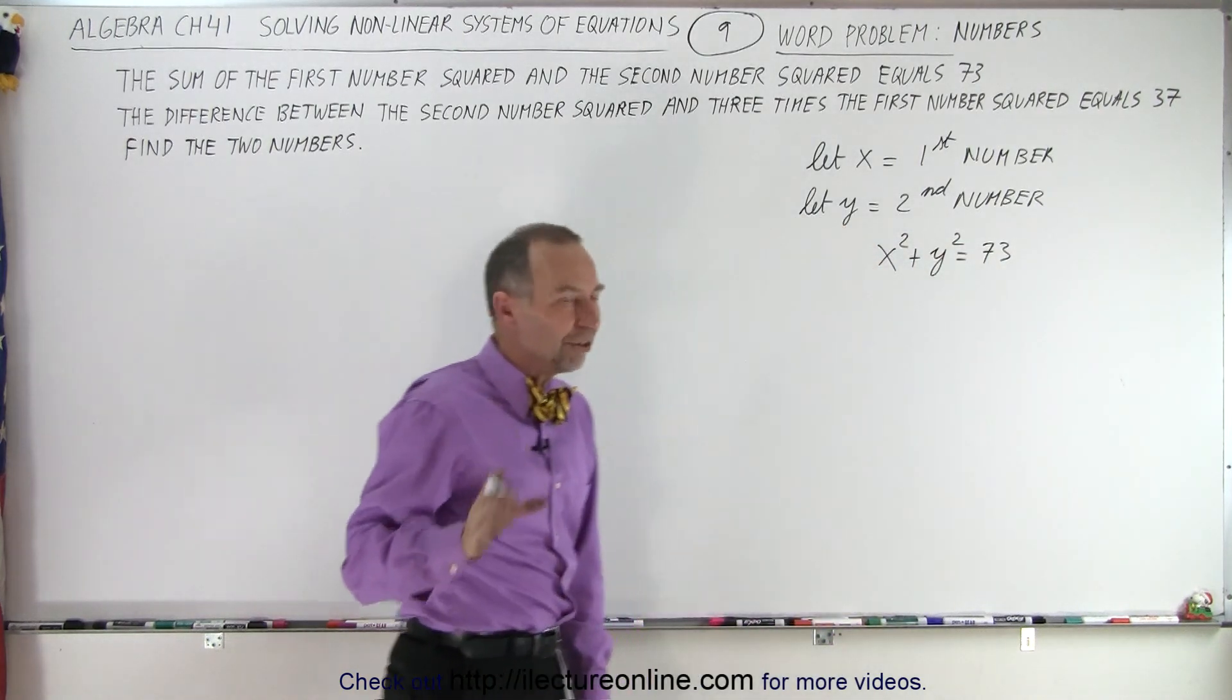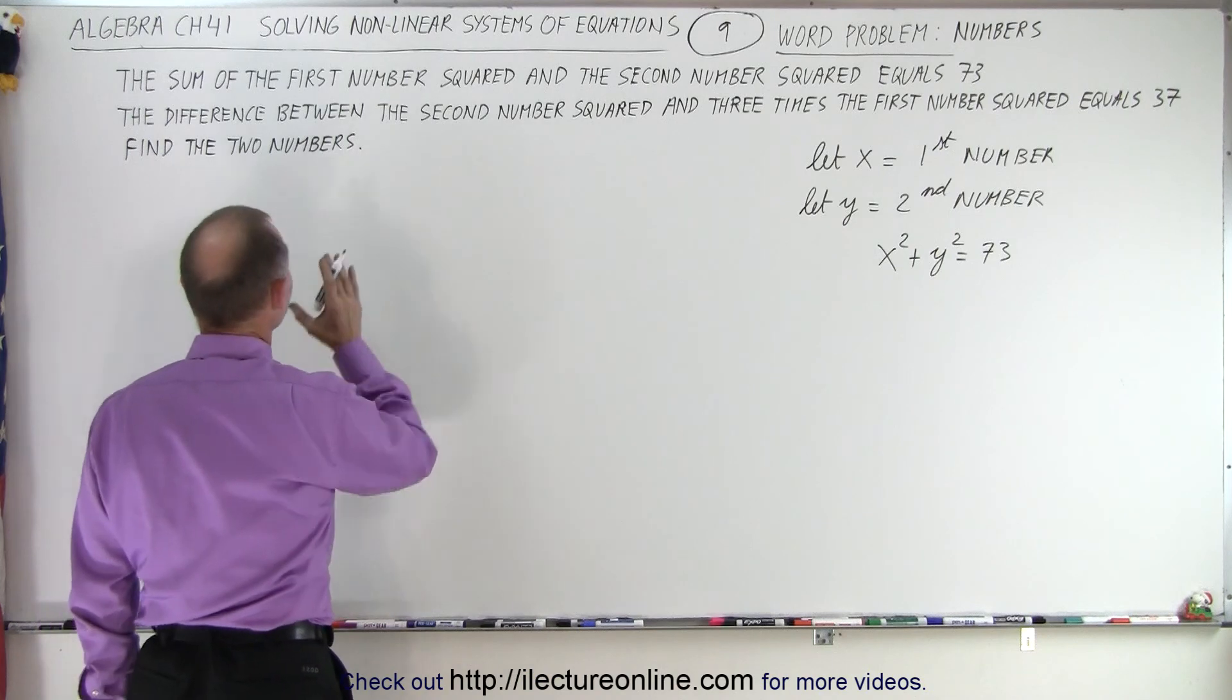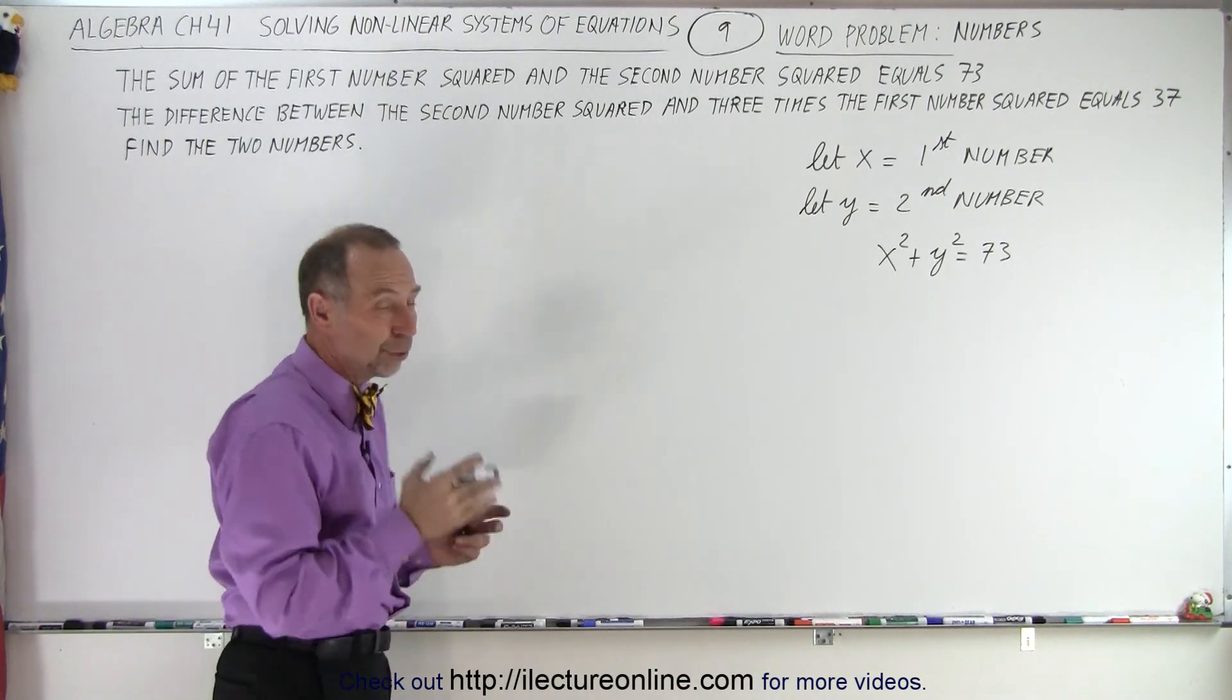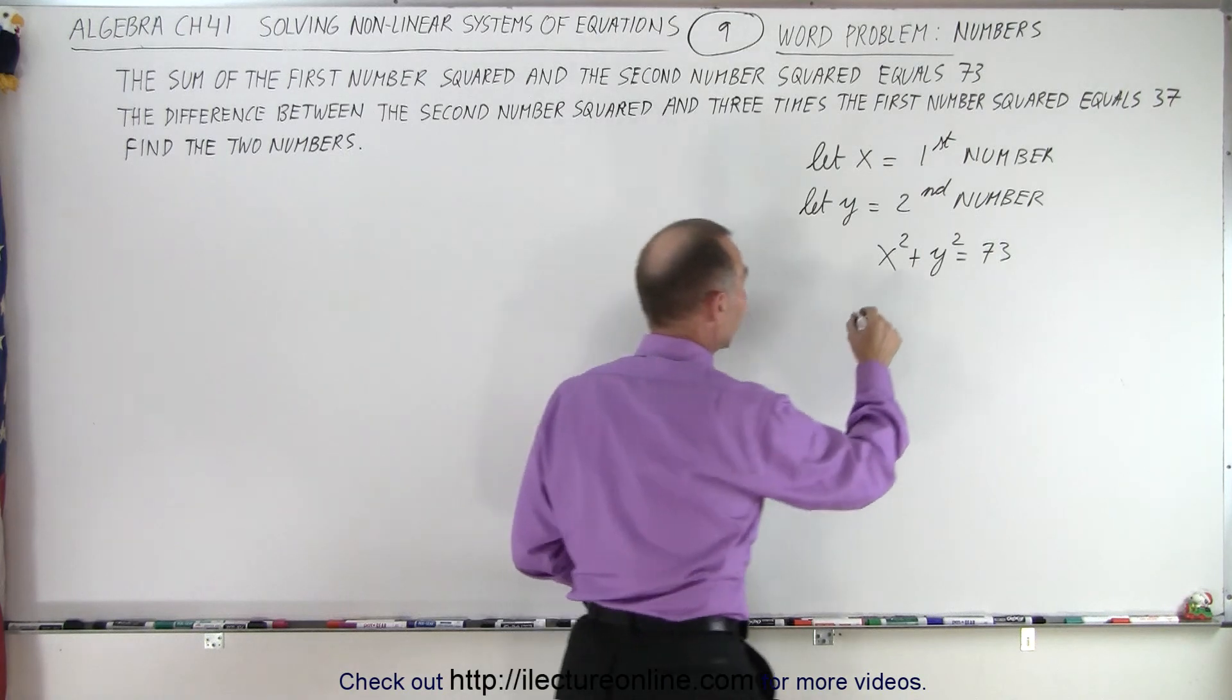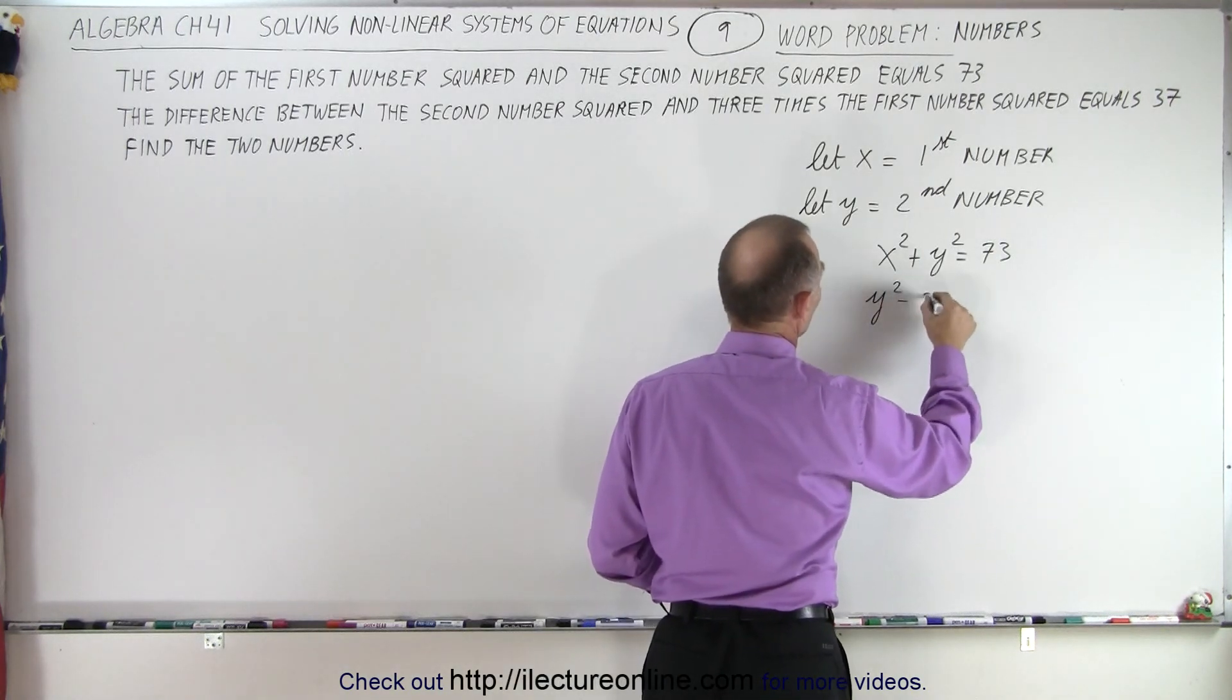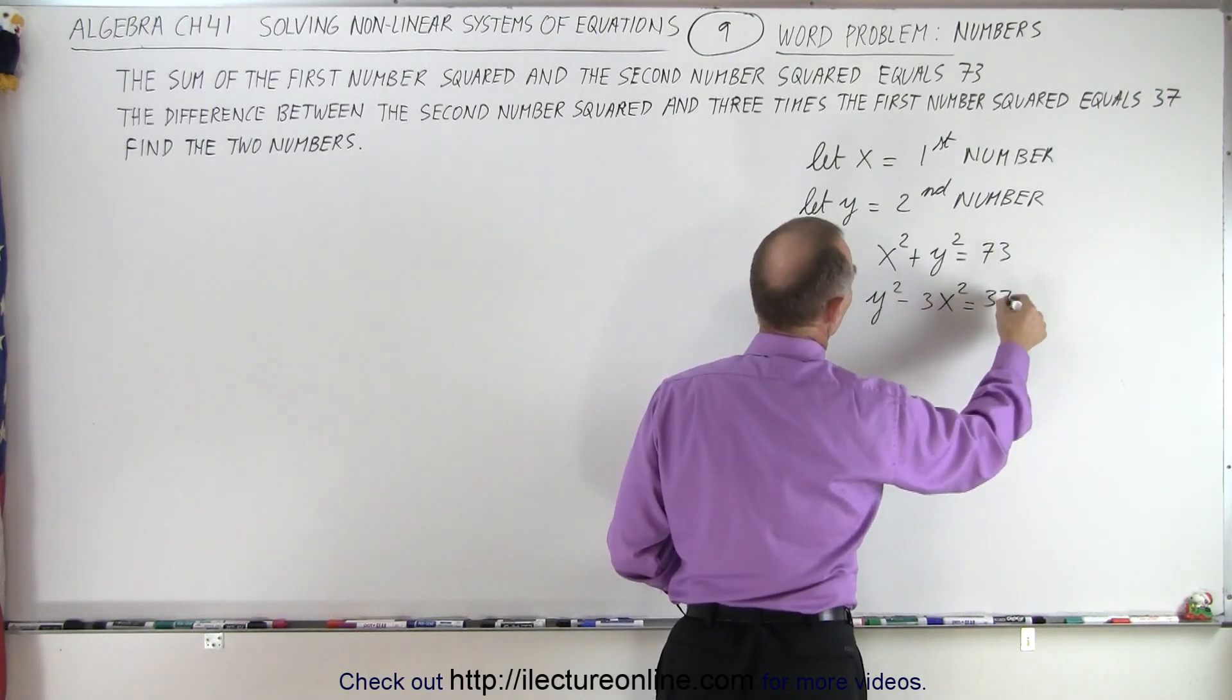And now they tell us the difference between the second number and three times the first number. So we do it in that order. That means the second number squared minus three times the first number squared equals 37.